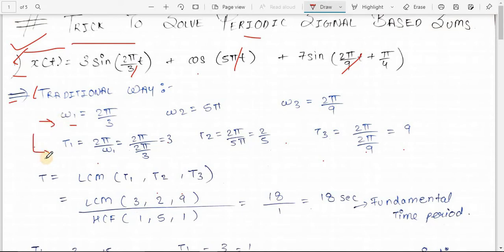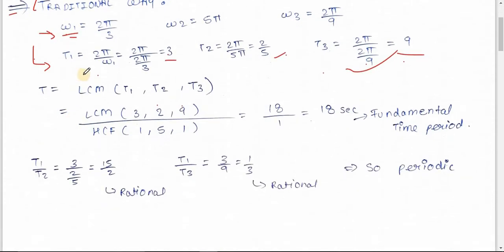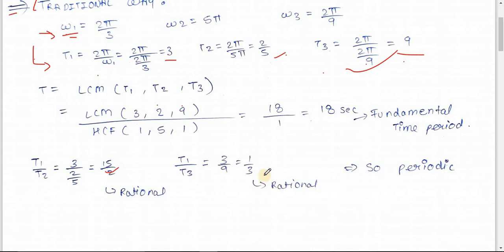To get T from omega, the formula is 2π/omega. So T₁ = 2π/(2π/3) = 3, T₂ = 2π/(5π) = 2/5, T₃ = 2π/(2π/9) = 9. Once we have T₁, T₂, T₃, we check whether the signal is periodic by taking their ratios. T₁/T₂ = 3/(2/5) = 15/2.